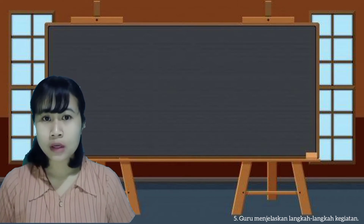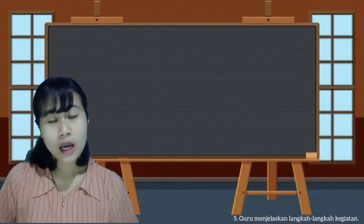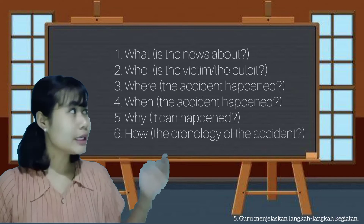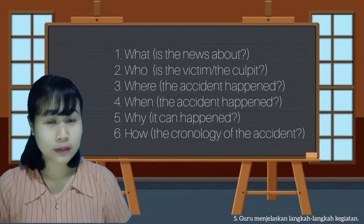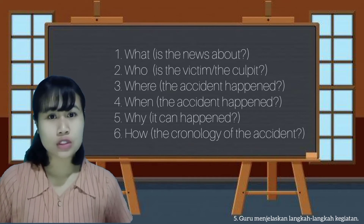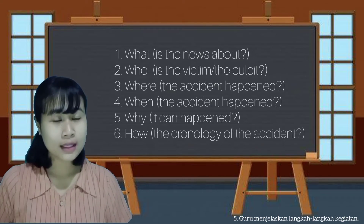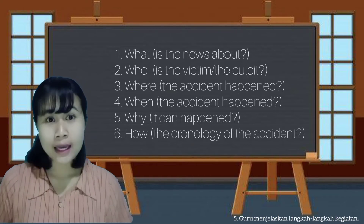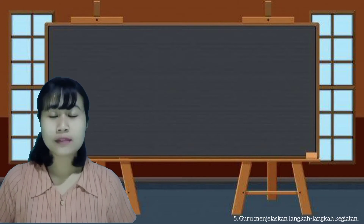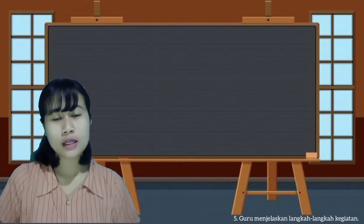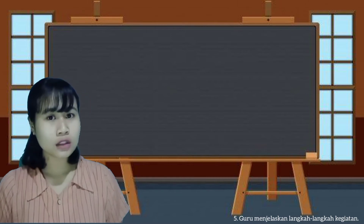It can be from a newspaper or digital sources. Please take note of the important information from the news. Here is a format to help you determine which information is important: you need to find out the What, Who, When, Where, Why, and How of the accident or event. After that, one representative from the group will deliver the results of your group discussion in front of the class.